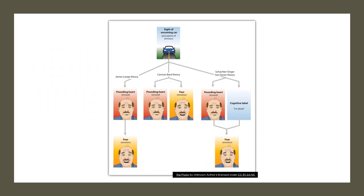Let's summarize these three theories before moving on. The James-Lange Theory, shown on the far left, explains that upon perceiving a stimulus — such as an oncoming car — your heart immediately starts to race, and then because of that pounding heart you experience the emotion of fear. So the physiological arousal comes first, and the emotion follows.